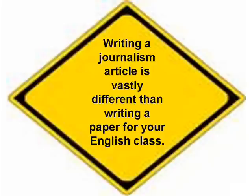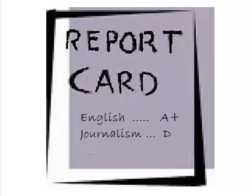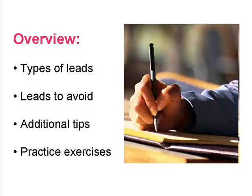For example, most English teachers will tell you to begin your first paragraph with a topic sentence — a sentence about what your paper will be about. But that would be an awful way to begin a journalism article. It's hard to break 12 years of writing habits. In today's lesson, we'll take a look at some of the different types of leads, some creative approaches, and leads you want to avoid — including the topic sentence lead, which is so popular in English composition papers.